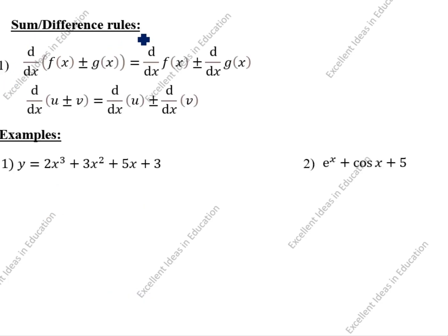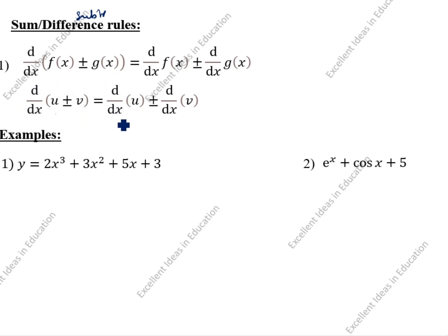Next, sum or difference rules. Sum means plus, difference means subtract. d/dx of [f(x) ± g(x)] equals d/dx of f(x) ± d/dx of g(x). We can take f(x) as u and g(x) as v, so: d/dx of [u ± v] = d/dx(u) ± d/dx(v). If the question has plus, use the plus formula; if minus, use minus.